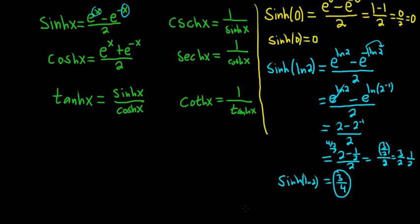So now that you have this one, if you had to evaluate, say, the hyperbolic cosecant of the natural log of 2, well, it's just the reciprocal, right? So it would just be 4 over 3, right? You would just flip it.